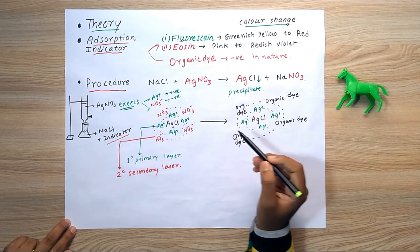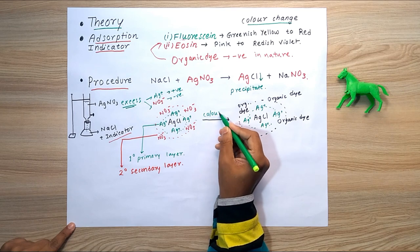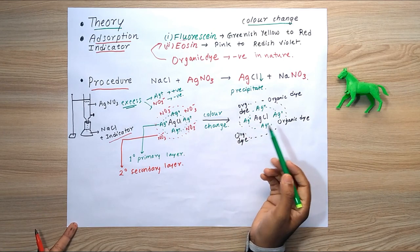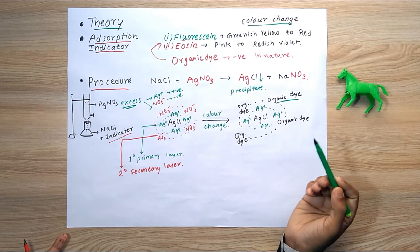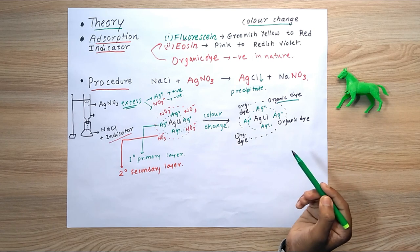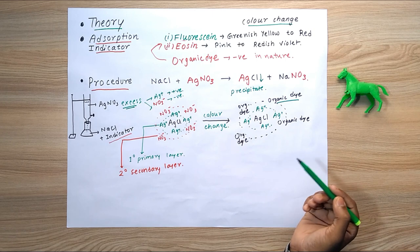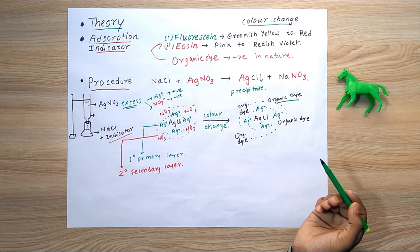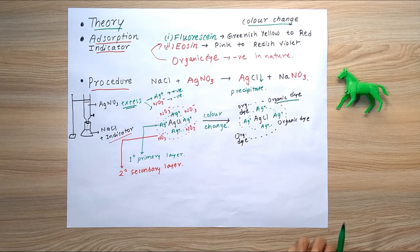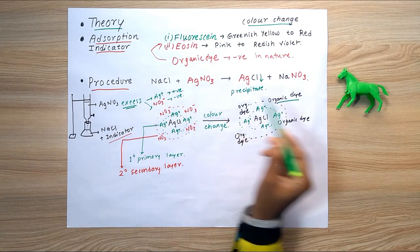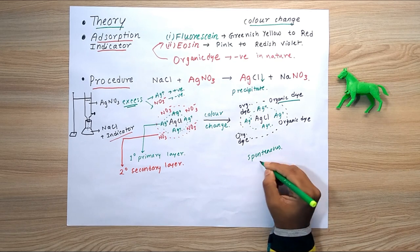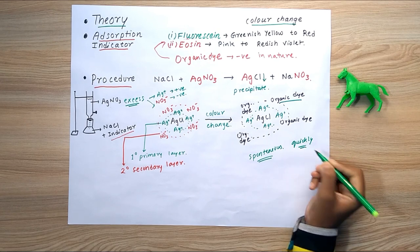The nitrate is released and the organic dye comes in — this happens very quickly and is essentially instantaneous. At this point, the color change occurs due to the replacement of NO3- by the organic dye. This adsorption of the organic dye causes a sharp and clear color change that determines the end point, indicating that no more NaCl remains in the conical flask and all of it has been used to form the AgCl precipitate. Remember: it is adsorption, not absorption.